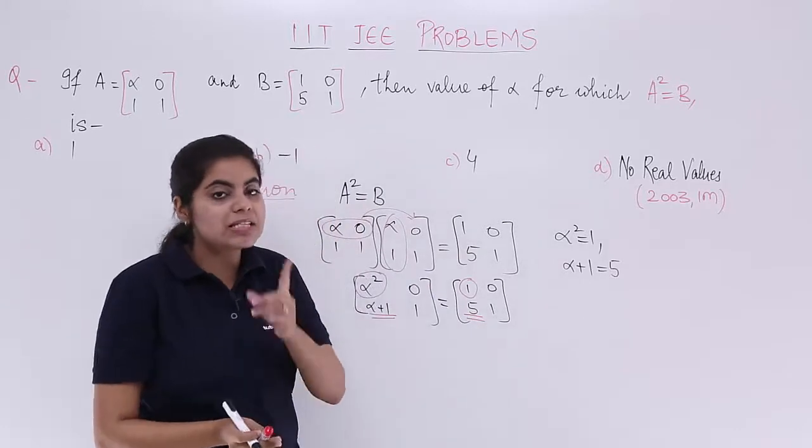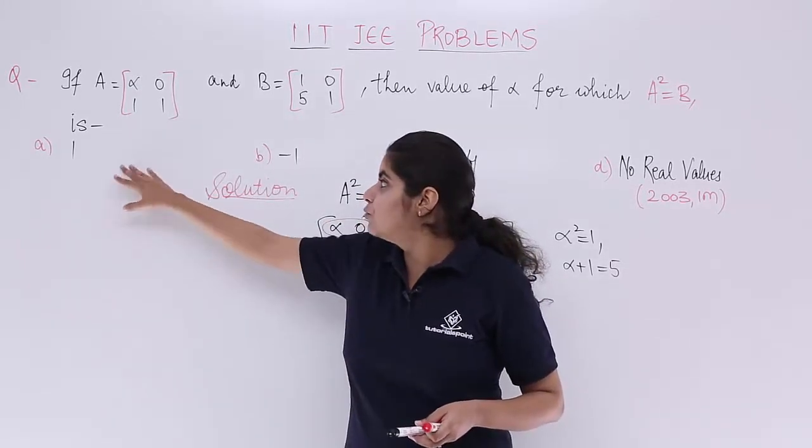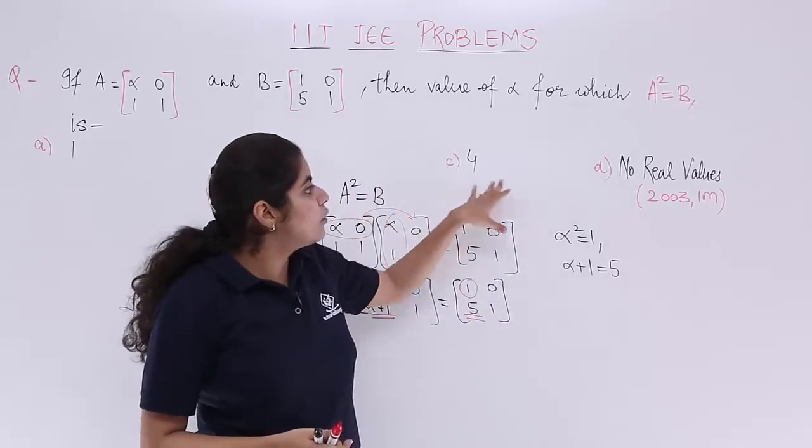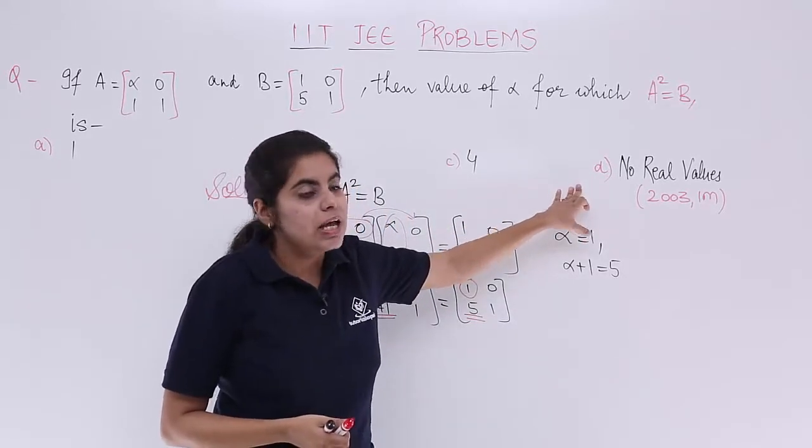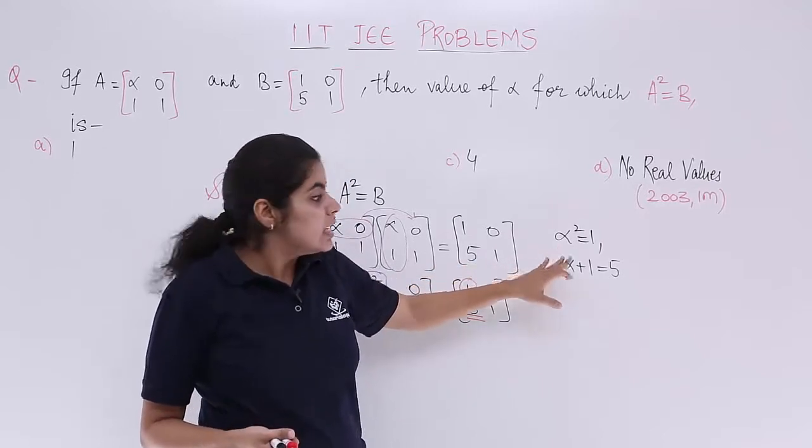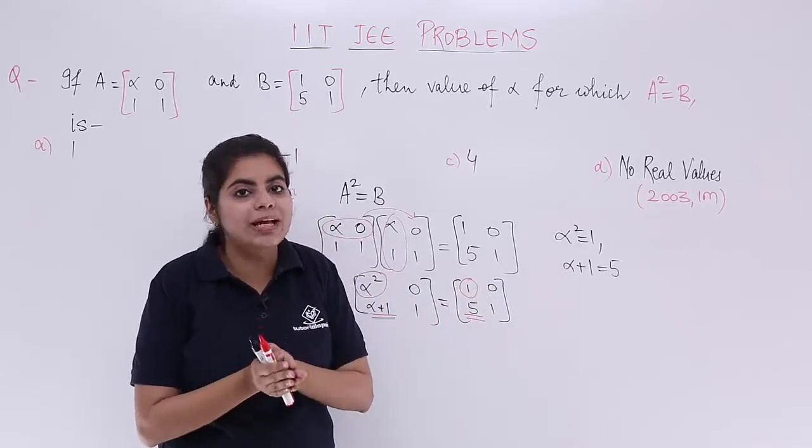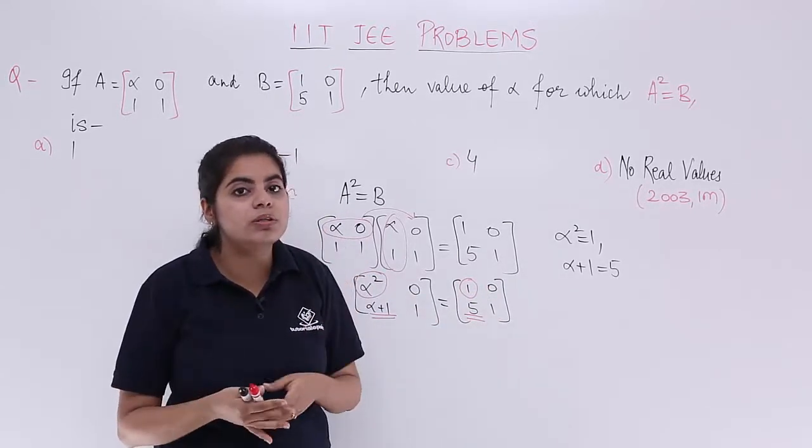Now you need to have a single value of alpha which would be the answer: either 1, minus 1, or 4, or no real values. Can it be 1 and minus 1 or 4? We need to see it. Since there are 2 equations and only 1 variable, we need to get an answer which satisfies both equations.